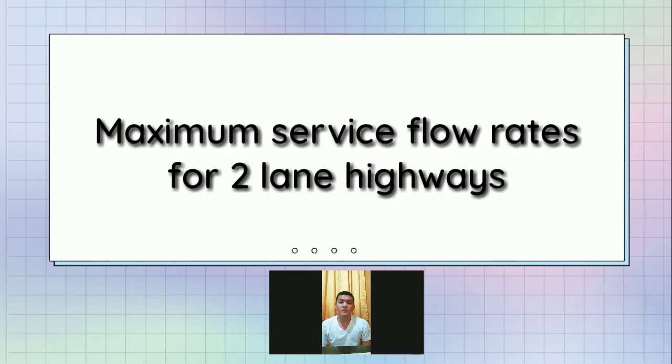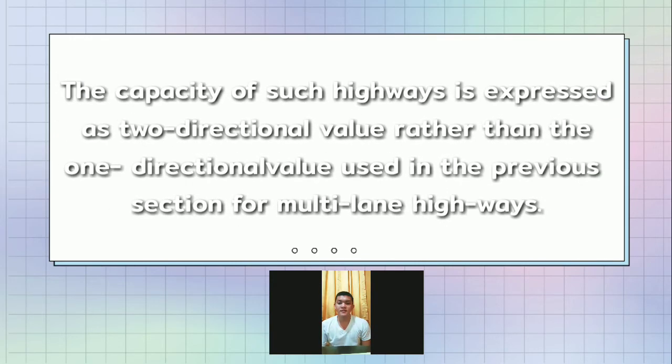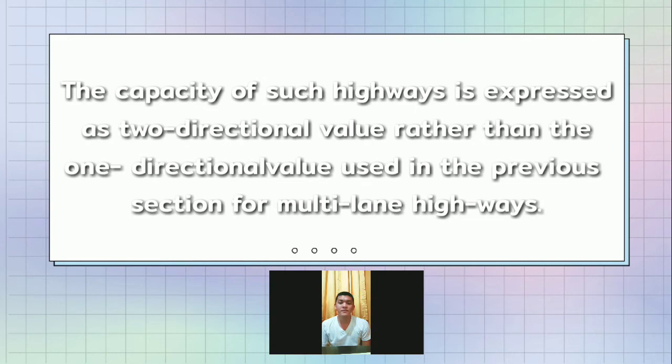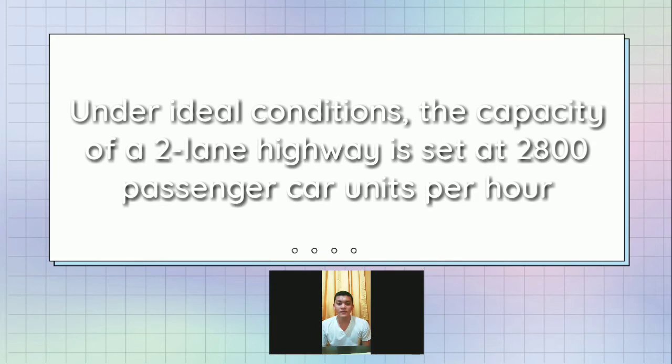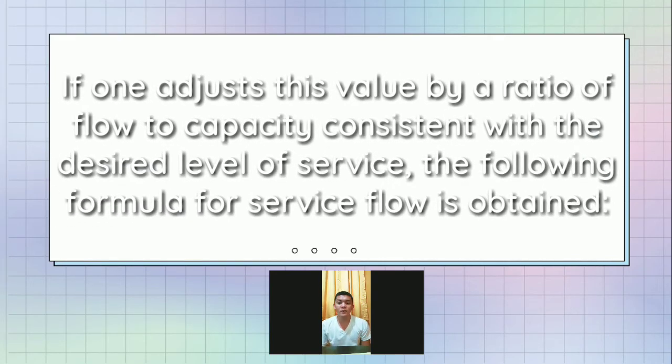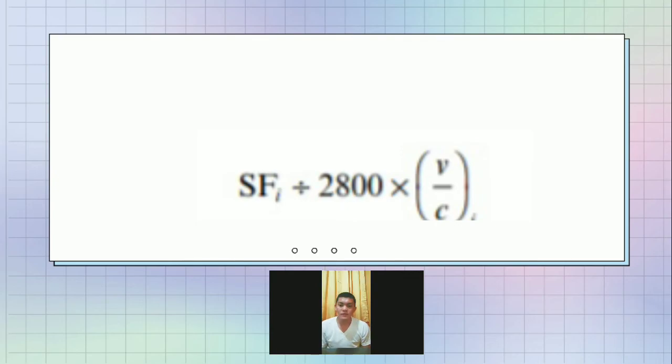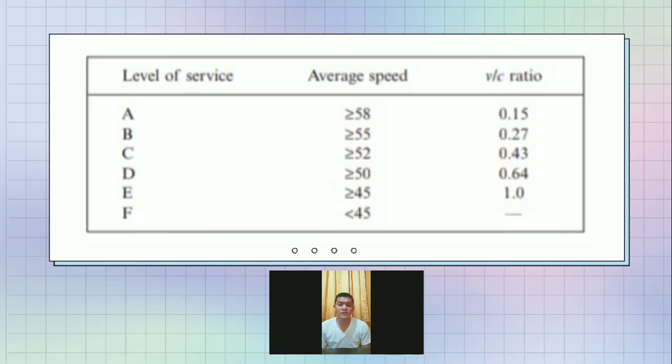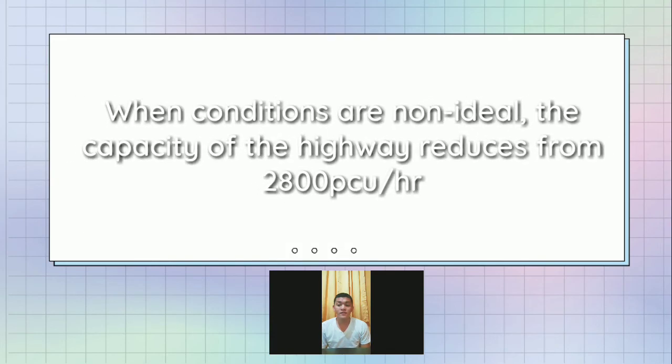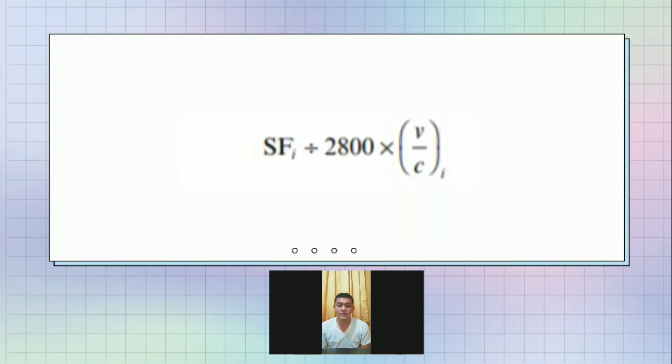Maximum service flow rates for two-lane highways. The capacity of such highways is expressed as two-directional value rather than one-directional value that was used in the previous section for multi-lane highways. Under ideal conditions, the capacity of a two-lane highway is set at 2,800 passenger car units per hour. If one adjusts this value by a ratio of flow to capacity consistent with the desired level of service, the following formula for service flow is obtained, where service flow is divided by 2,800 times the quantity V over C. The table shows the level of service values per two-lane highway under ideal conditions. When conditions are non-ideal, the capacity of the highway reduces from 2,800 PCU per hour based on the equation shown above.